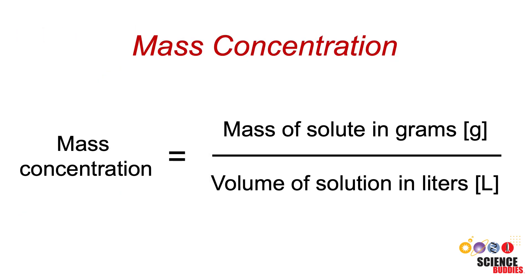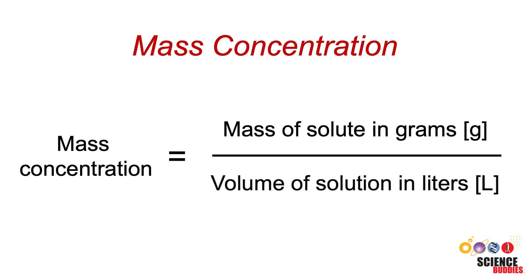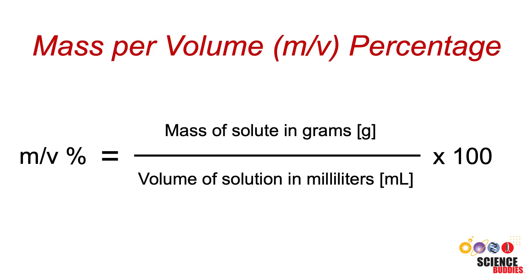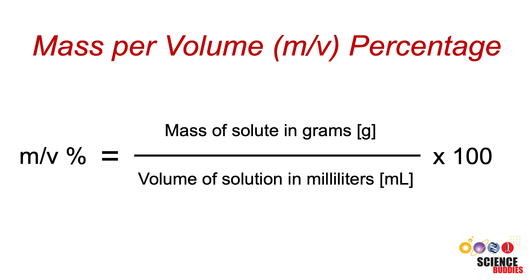There are several ways of expressing the concentration of a solution. A common way is the mass concentration, which is the mass of solute in grams per volume of the solution in liters. A variation of the mass concentration is the mass per volume percentage, which is calculated by dividing the mass of the solute in grams by the volume of solution in milliliters and then multiplying this by 100.